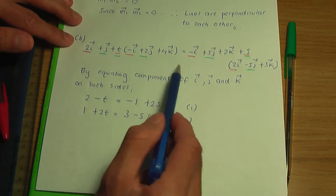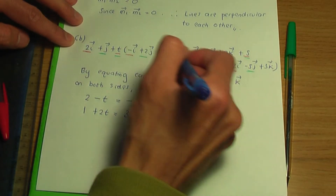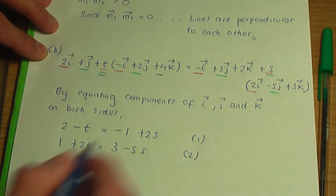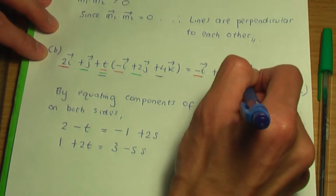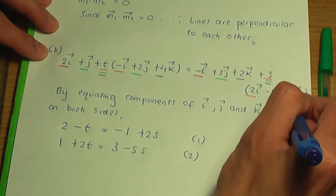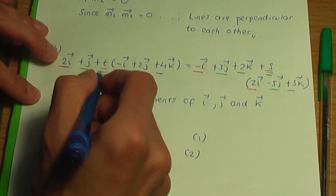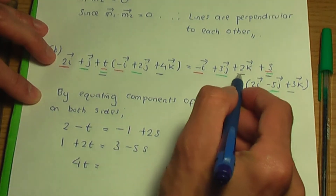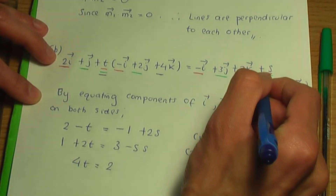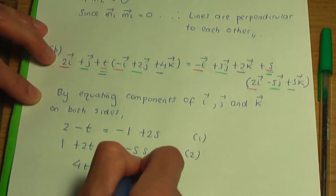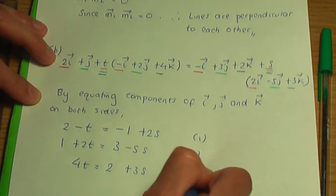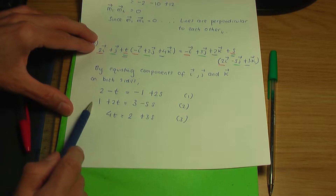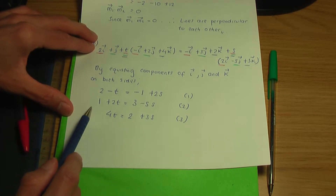Now for the k components: on the left I have t(4) = 4t. On the right I have 2 + s(3) = 2 + 3s. So: 4t = 2 + 3s — let's call that equation 3. The next step is to take any two equations and solve simultaneously to work out t and s. I'm going to take equations 1 and 2.